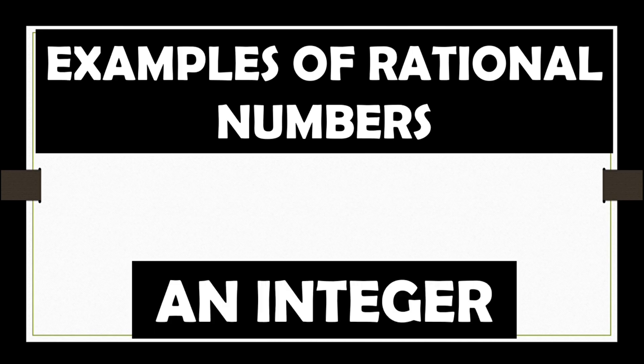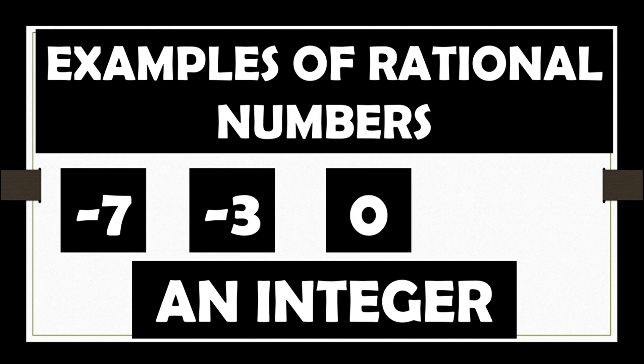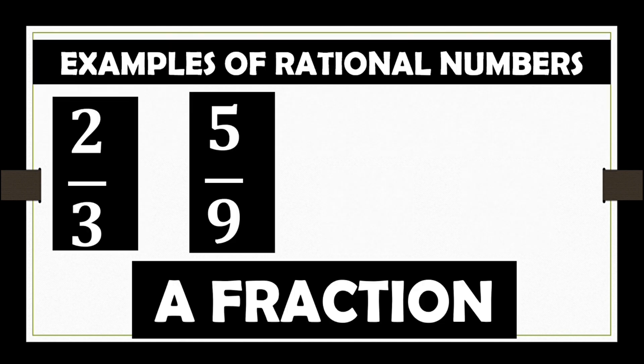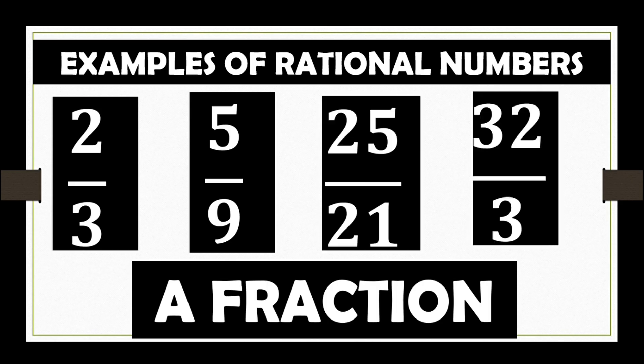An integer like negative 7, negative 3, 0, 10. A fraction like 2 thirds, 5 ninths, 25 over 21, 32 over 3.